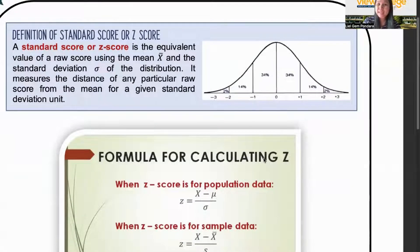Now, how do we define a standard score or Z-score? Remember, these ones at the bottom of the normal curve, we call them Z-scores or standard scores. The Z-score or the standard score is the equivalent value of a raw score using the mean that's X-bar and the standard deviation sigma of the distribution. It measures the distance of any particular raw score from the mean for a given standard deviation unit. Remember that in the normal curve, our mean, or what is a mean? The average is found at zero.